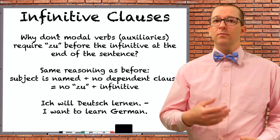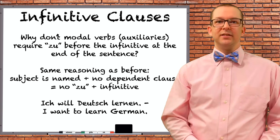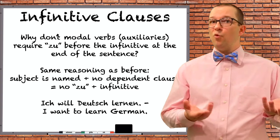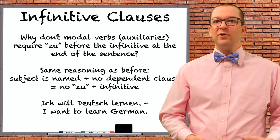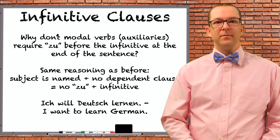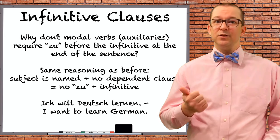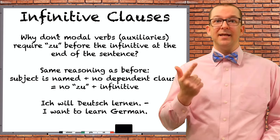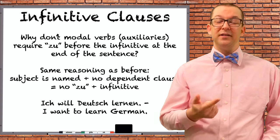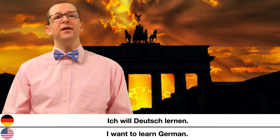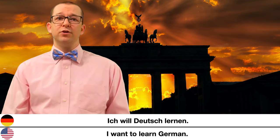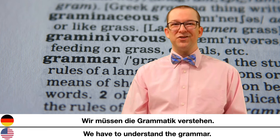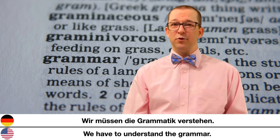What about modal verbs or modal auxiliaries? Why don't you use 'zu' with them? The same reasons as before: the subject is named in sentences with modal verbs and there is no dependent clause — it lacks both requirements for an infinitive clause. Ich will Deutsch lernen — I want to learn German. Wir müssen die Grammatik verstehen — We have to understand the grammar.